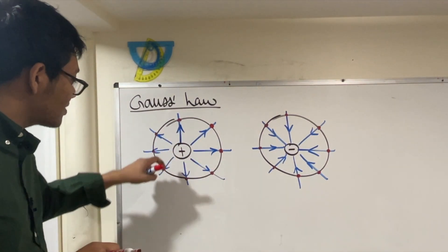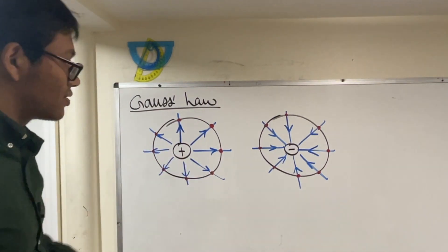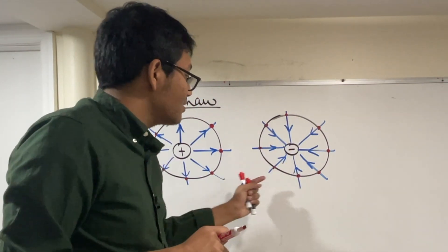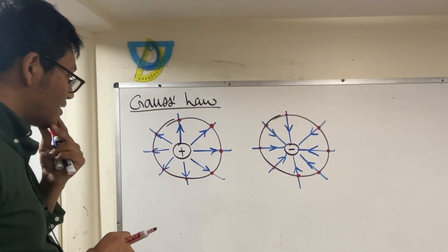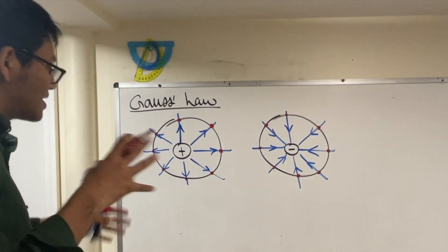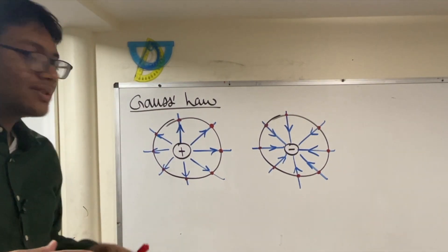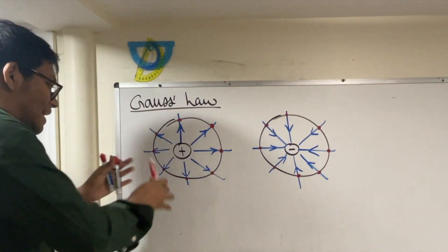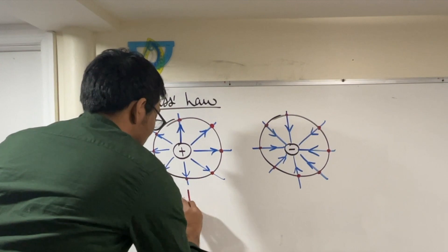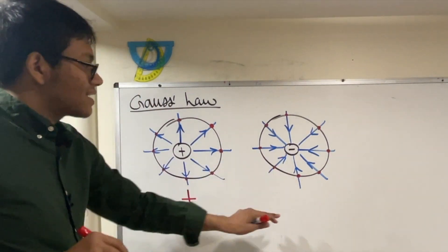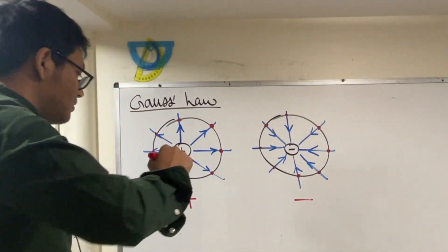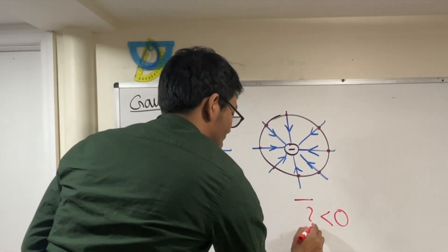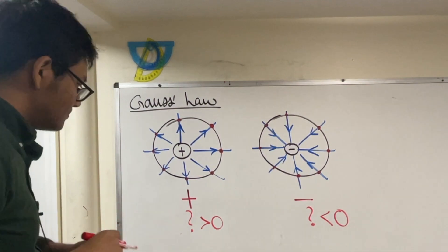For the plus charge, the electric field lines are crossing and going out of the circle. For the negative charge, the electric field lines are crossing the circle and coming in. So Gauss thinks about this and thinks: what if I come up with some kind of mathematical operator to describe what's happening here? I'm going to say that if the field lines are going out, that operator is going to be positive, and if the field lines are coming in, the operator is going to be negative.